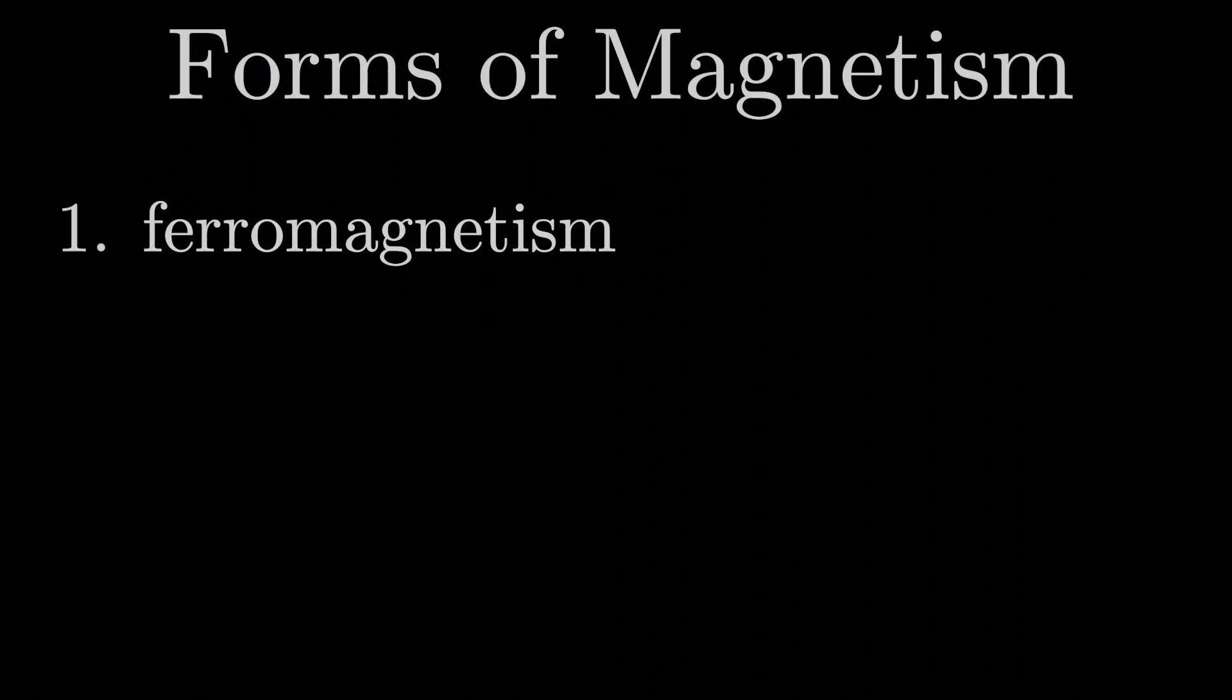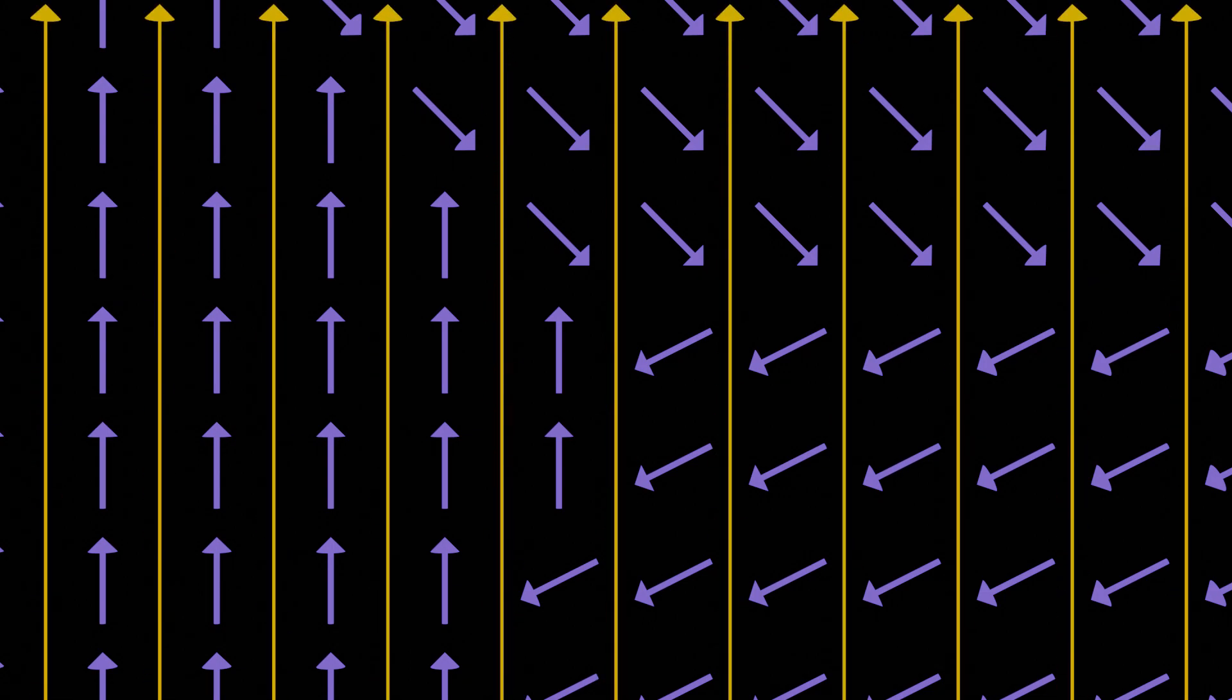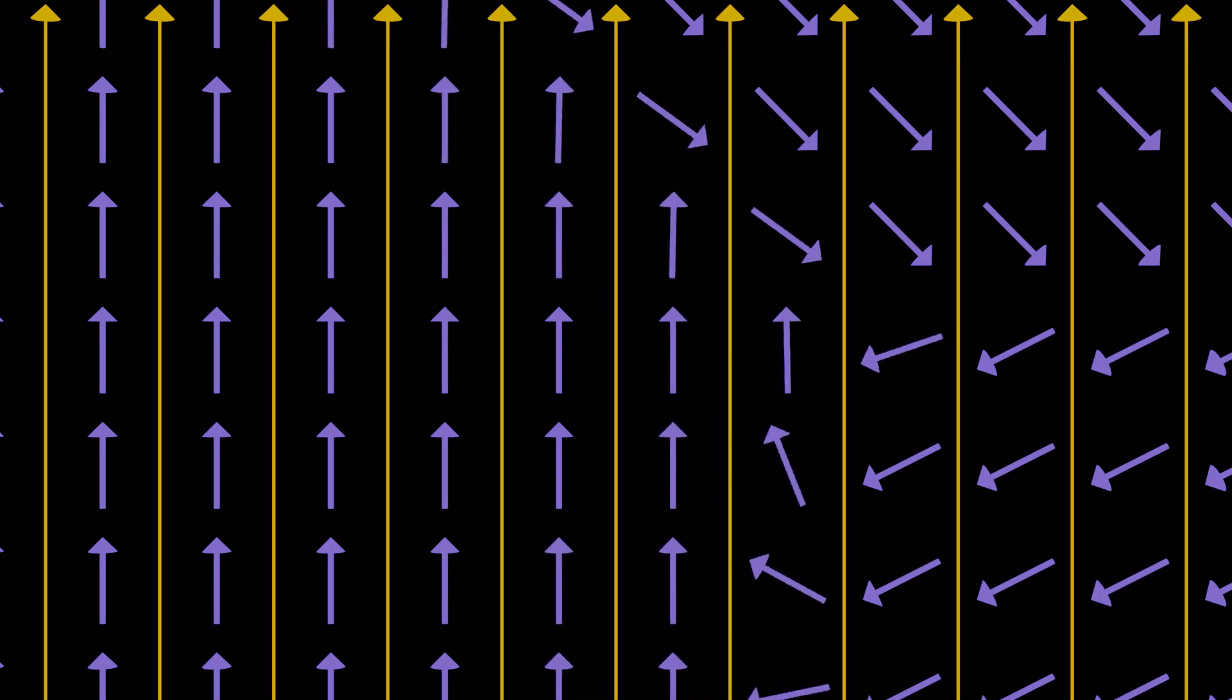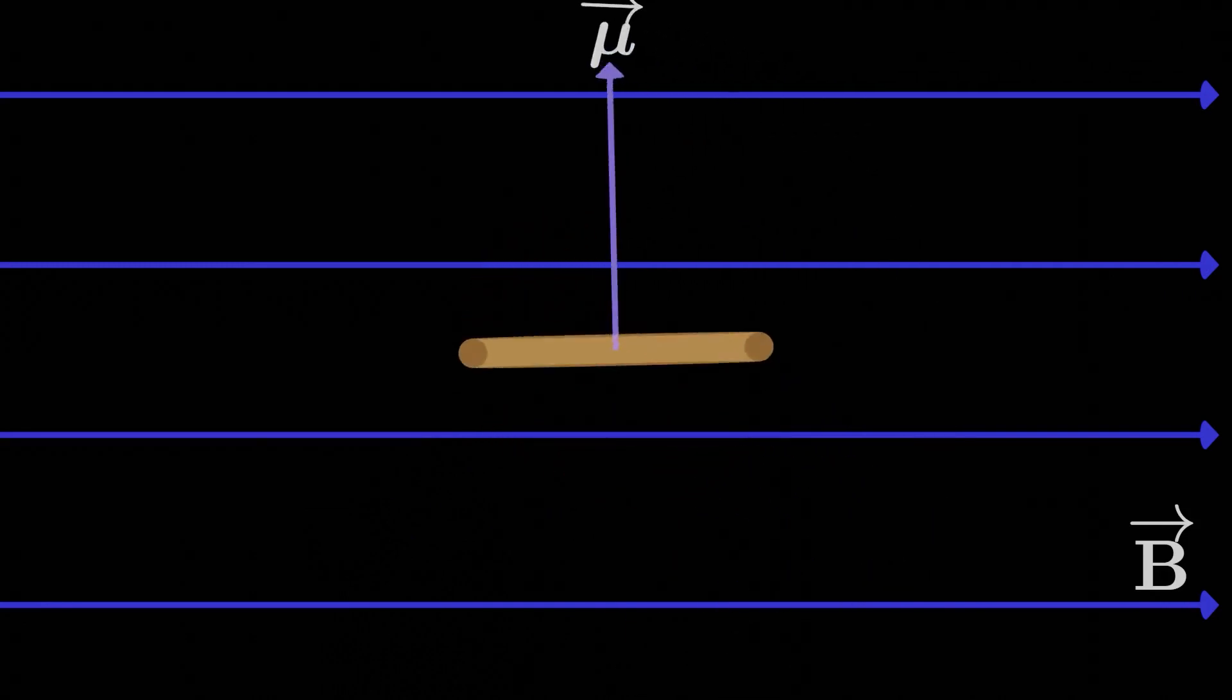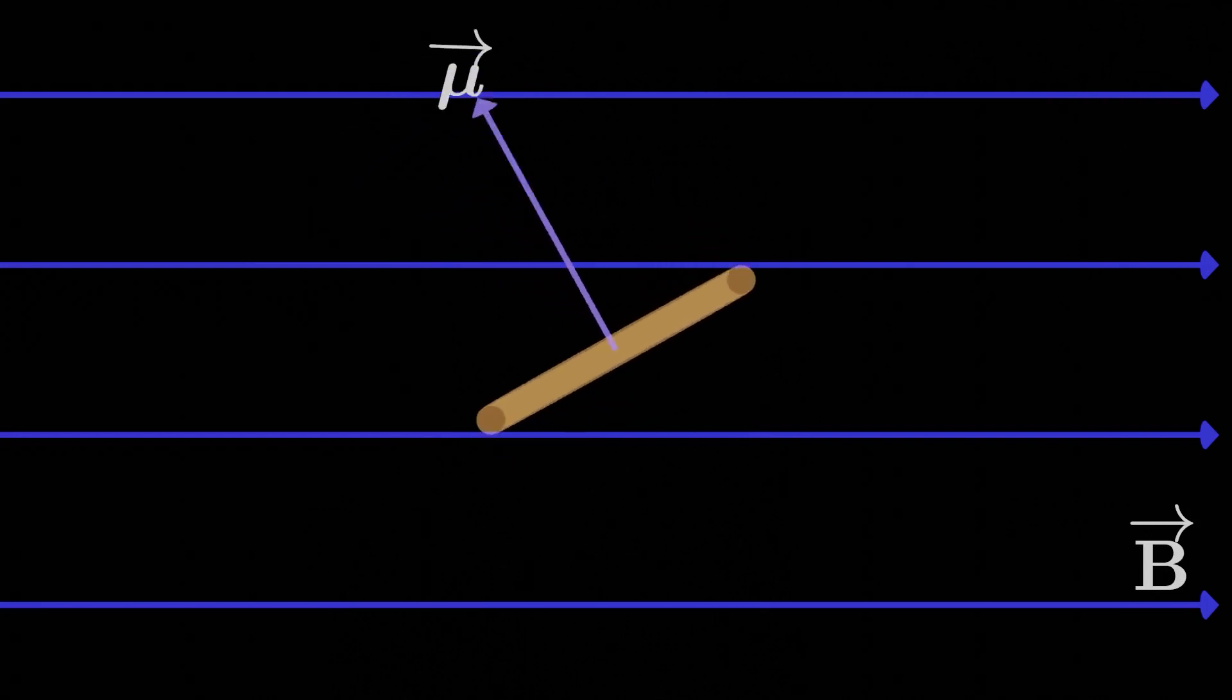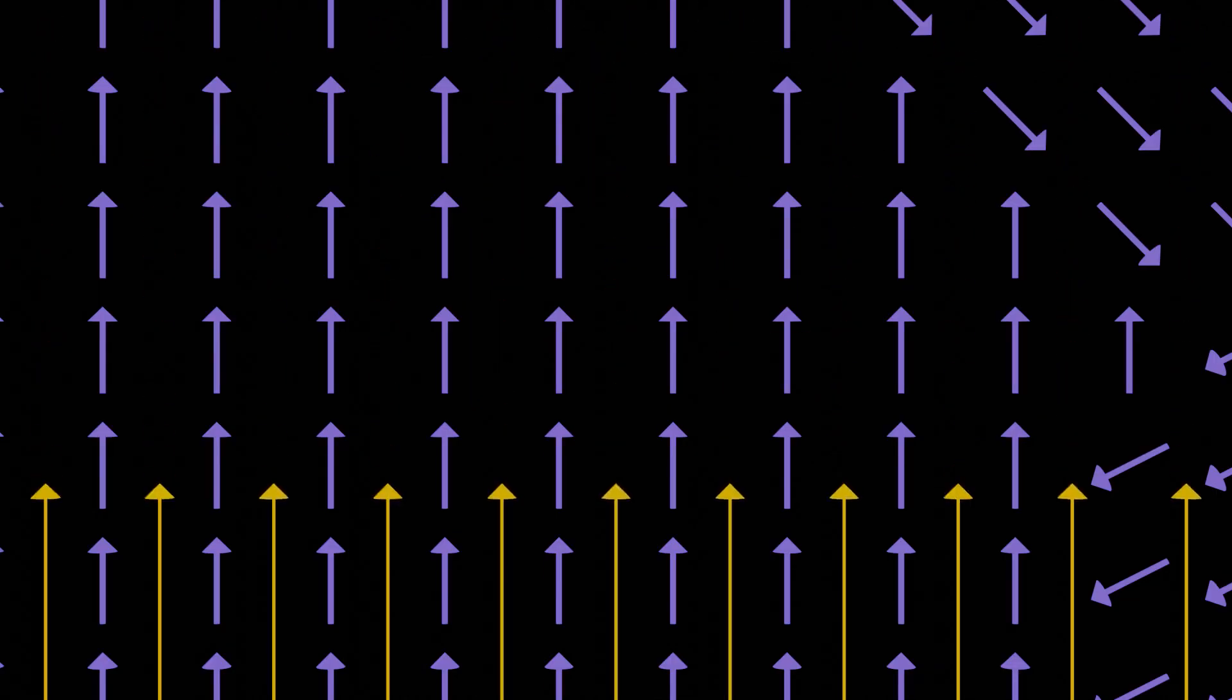So ferromagnetism is one form of magnetism. In a ferromagnetic material, domains full of magnetic dipoles can be randomly oriented and not really lead to any real net magnetic dipole moment. But when we introduce the material to an external magnetic field, the domain boundaries shift to produce a net magnetic dipole moment in the direction of the magnetic field, kind of in the same way that a magnetic field produces a torque on a magnetic dipole, causing it to oscillate toward the magnetic field direction. Then if we take away the magnetic field, that dipole moment persists to some extent, and we're left with a permanent magnet. So that's ferromagnetism.